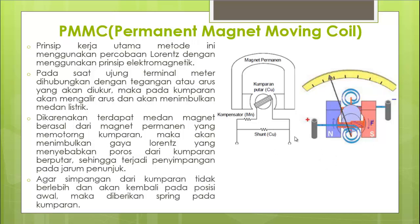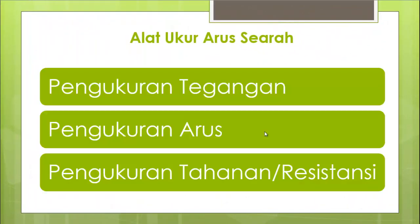Agar simpangan kumparan tidak berlebih, diberi spring sehingga tidak bergerak terlalu ke kanan dan bisa kembali saat terminal di-open. Pada pembahasan ini saya akan menyampaikan mengenai alat ukur untuk tegangan, arus, dan pengukuran tahanan atau resistansi, dengan memanfaatkan PMMC.